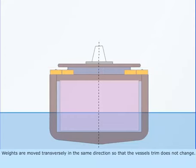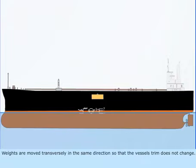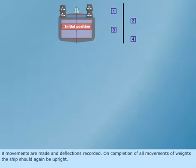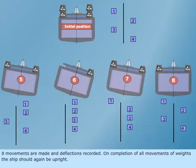Weights are moved transversely in the same direction so that the vessel's trim does not change. Eight movements are made and deflections recorded. On completion of all movements of weights, the ship should again be upright.